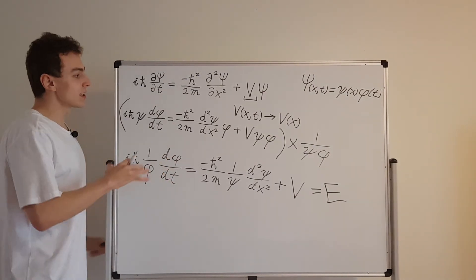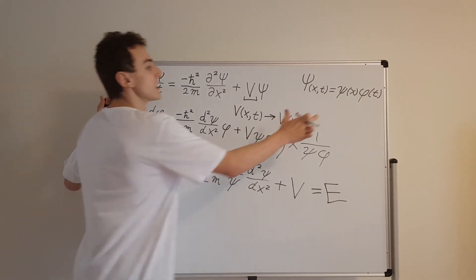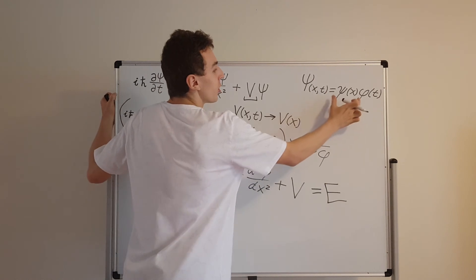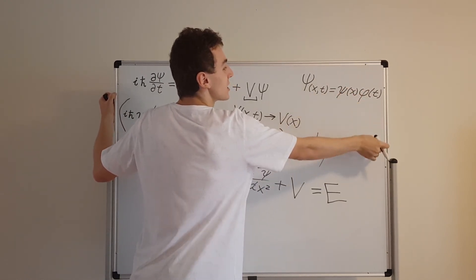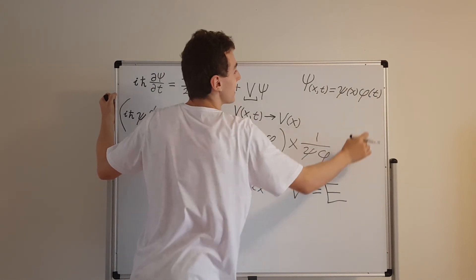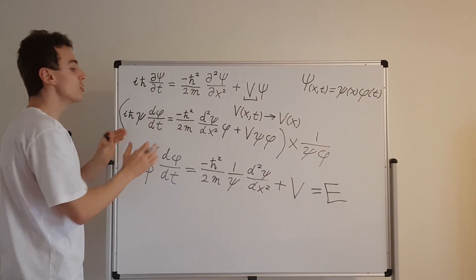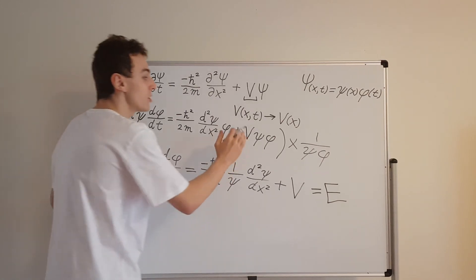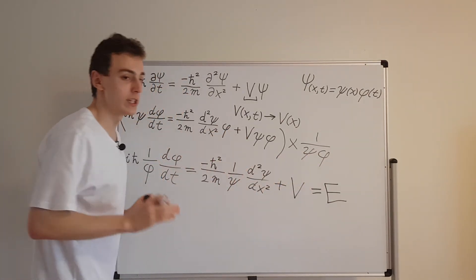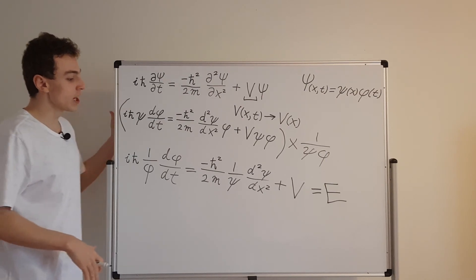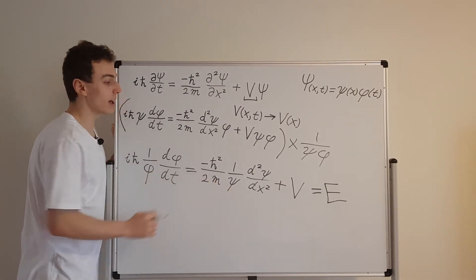As a quick summary: the method of separation of variables involves substituting a solution of the form where you separate it into functions exclusively of x and exclusively of t. That allows you to exploit the structure of the derivatives, and after dividing by both functions you get two separate ODEs. Make sure you watch the next few videos in this playlist where we actually solve these two equations.